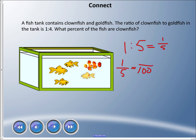1 to 5—can we change this into a percent? It has to go out of 100. We can do something with this: five times something is 100, and that number is 20. We're going to do the same thing to the numerator, so we have 20 out of 100. 20 out of 100 is 20%, so 20% of the fish are clownfish.